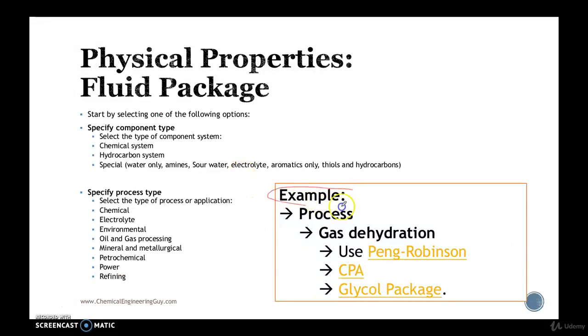So this is a little example. Let's say I have a process. So I choose, I will choose by process. I don't know the components. I only know the process. And then let's assume I got a gas dehydration. So once I click this process, the method assistant will recommend me this set of fluid packages.